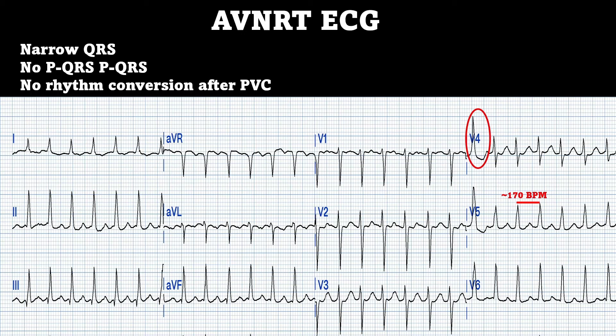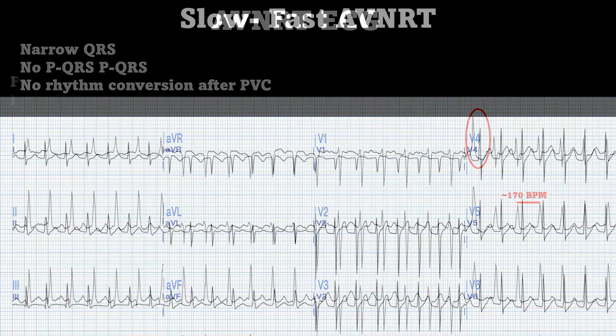The reason why this PVC excludes AVRT is because in AVRT, the accessory pathway is outside of the AV node, and this is more susceptible to converting back to a normal rhythm.